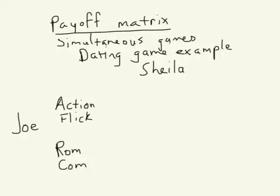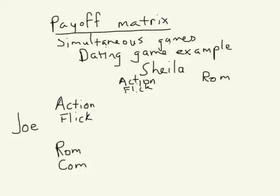Sheila faces the same two decisions. They went into the restrooms at the same time, came out, lights are off, and they've got to figure out which movie to enter. Joe can go to the action flick or the rom-com, and Sheila can go to the action flick or the rom-com. Those are their possible actions — go to one movie or the other.